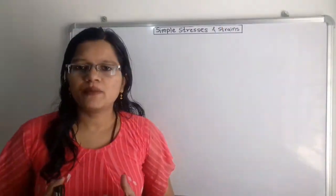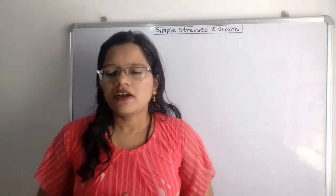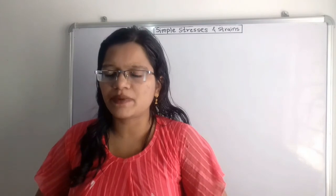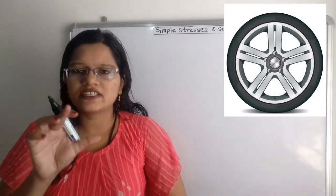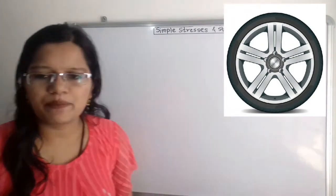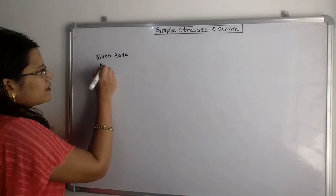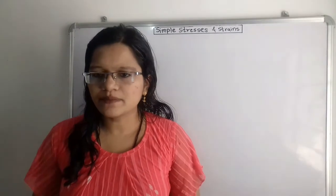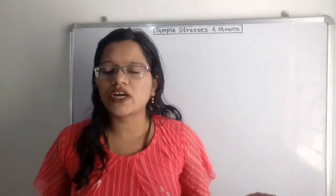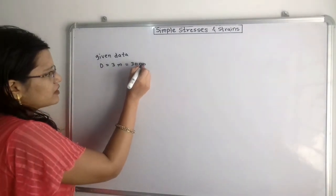So this is the given problem. First we have to understand the given data. The rigid wheel diameter is given — here capital D is given because on the outside there is the wheel and on the inside there is the steel tire. So in the given data, capital D equals 3 meters. Since Young's modulus E is given in Newton per millimeter square, we convert all dimensions to millimeters: 3 meters equals 3000 millimeters.